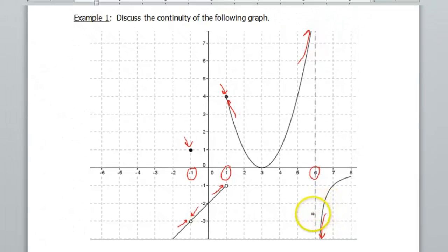So to recap, you have problems if you have a hole in the graph, which is what is happening at negative 1. You have a problem if you have a jump in the graph, which is what's happening here at x equals 1. Or if you have an asymptote, that's what's happening here at x equals 6. There are other places where you could have problems with continuity, but these are definitely the main three.